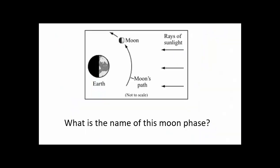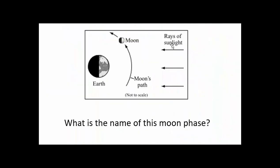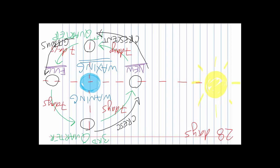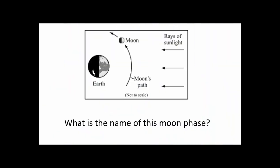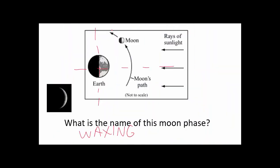One word of warning: let's say a test question shows a moon phase with the sun rays coming from the right side. When we drew our cheat sheet, the sun was on the left. So how do we solve this? It's really easy — in order to have the sun on the right, all you do is take your paper and rotate it. Now our sun is on the right. Drawing the crosshairs, the moon appears in the top right, so that would be a waxing crescent. This is a waxing crescent.